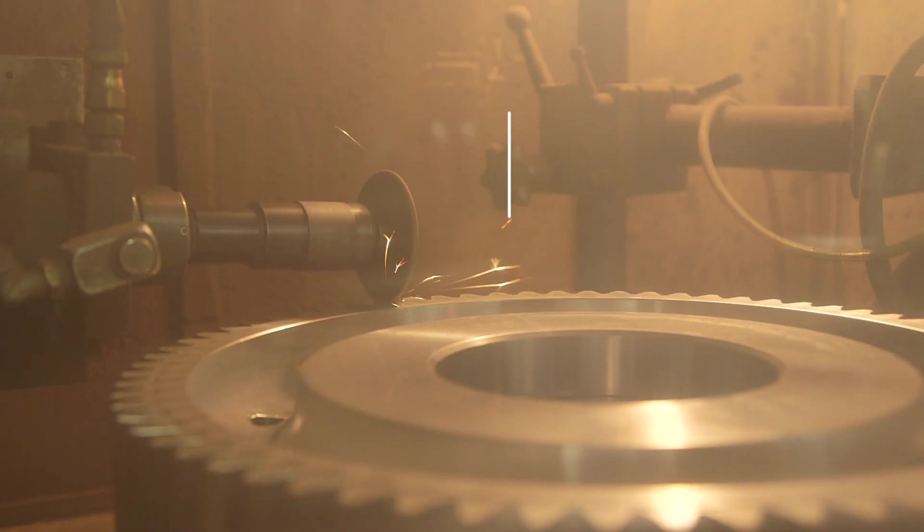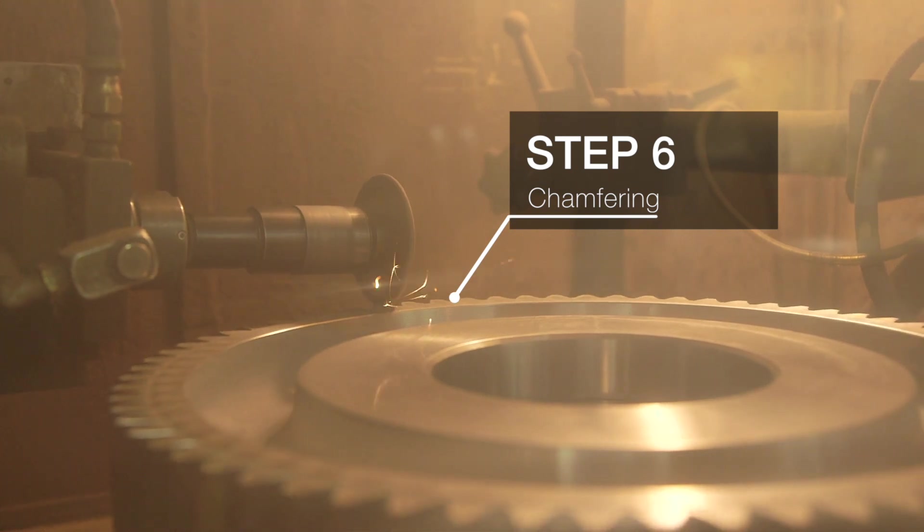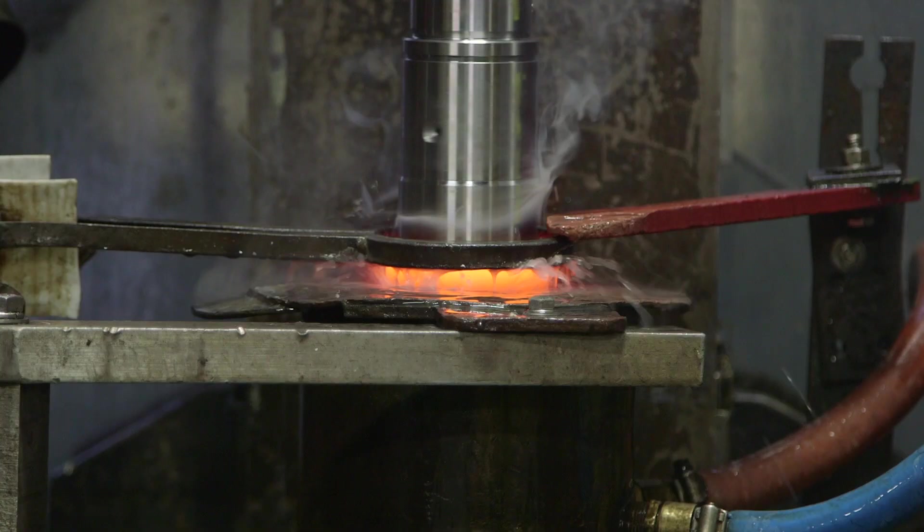Deburring is followed by chamfering, a process that rounds the edges of the gear teeth to reduce friction and eliminate interference.